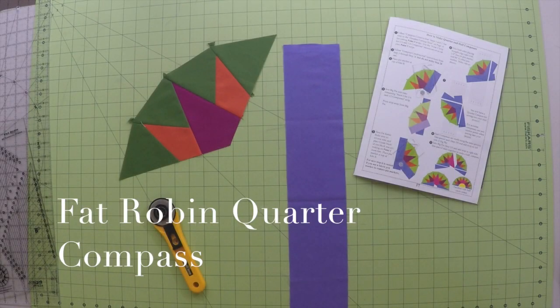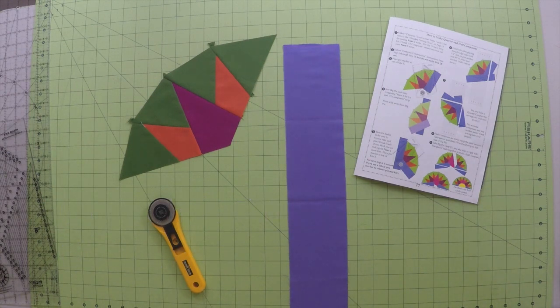Okay, so let me show you how to make a Fat Robin quarter compass. Instructions are found on page 17 of your Fat Robin 60 degree compass book.